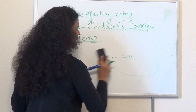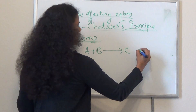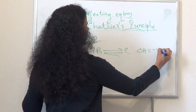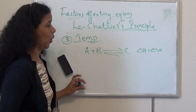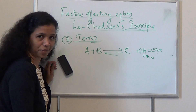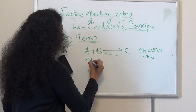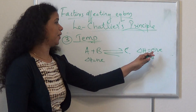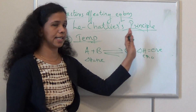Consider a general example: A plus B giving C. For this forward reaction, delta H is negative — we have to control the sign carefully. If the forward reaction has delta H negative, that means the forward reaction is exothermic. If the forward reaction is exothermic, then the backward reaction will be endothermic. So forward reaction enthalpy change is negative and backward reaction enthalpy change is positive.